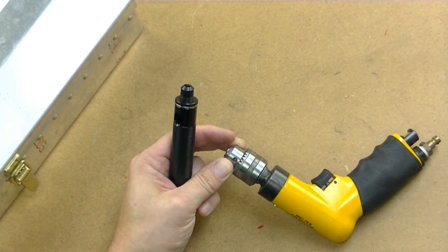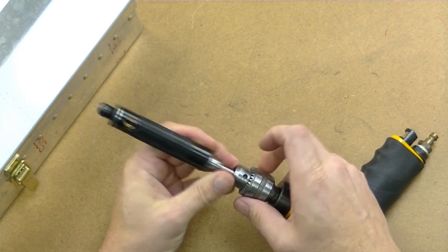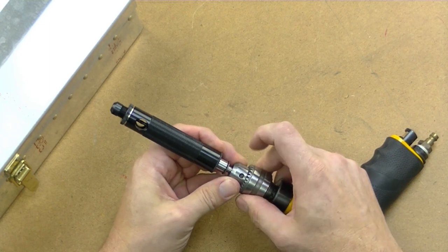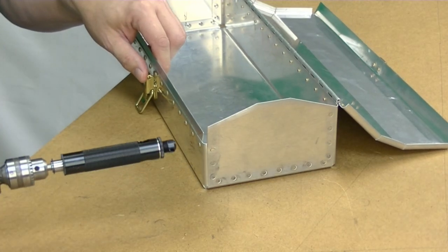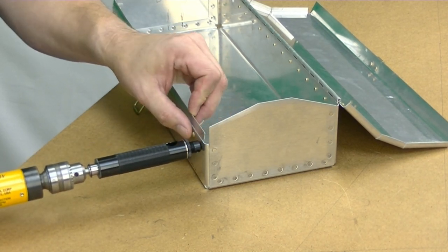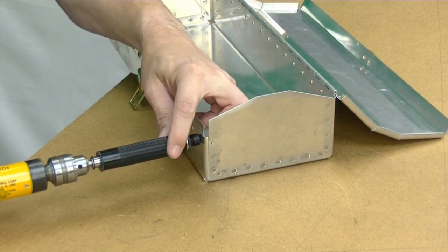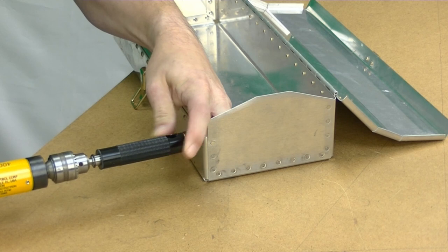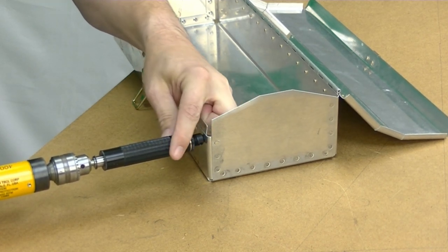You'll want to turn it fairly slow. It's not a high speed operation like drilling a hole through a thin piece of material would be. So just center the guide piece over the rivet and then hold this piece tightly in toward the material.